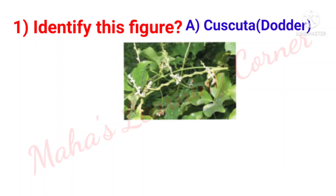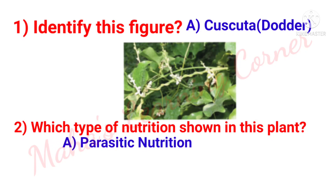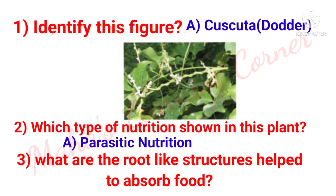Identify this figure. Answer: Cuscuta or dodder, which is a parasitic plant. Which type of nutrition is shown in this plant? Answer: Parasitic nutrition. What are the root-like structures that help to absorb food? Answer: Haustoria.